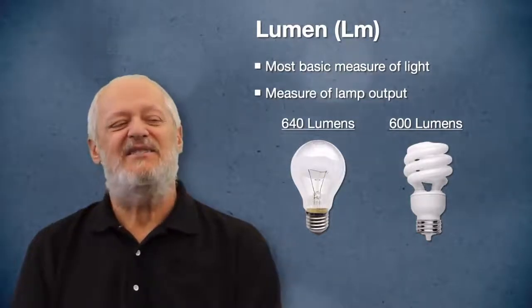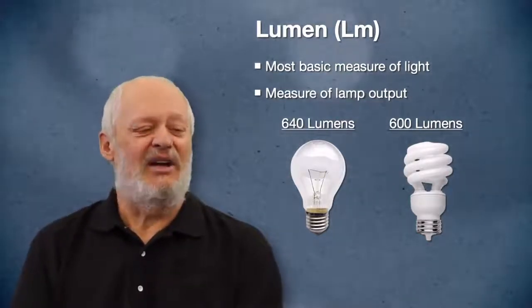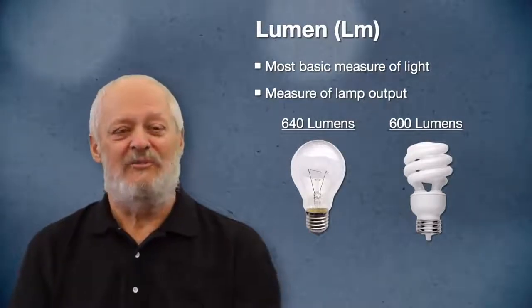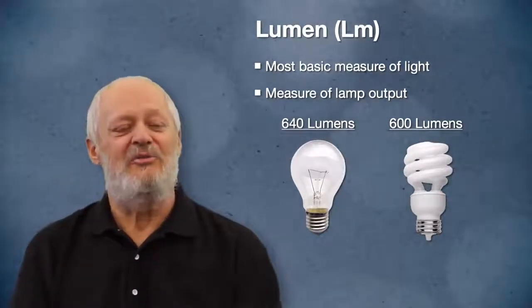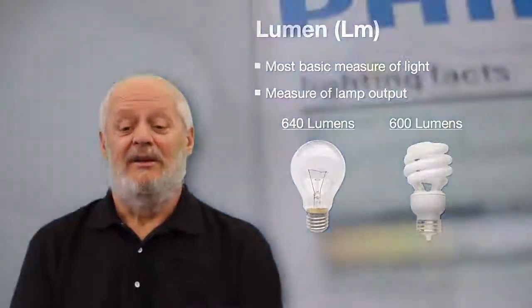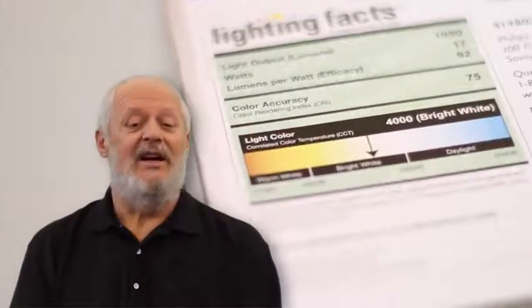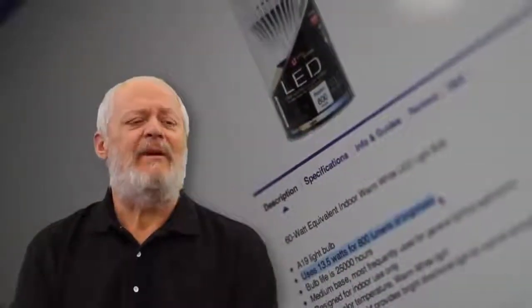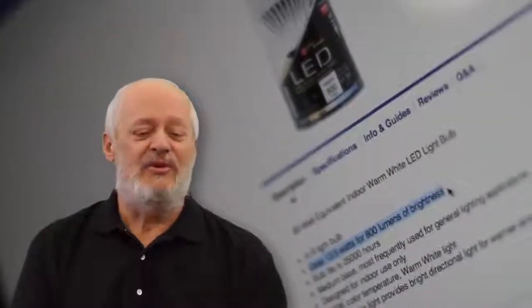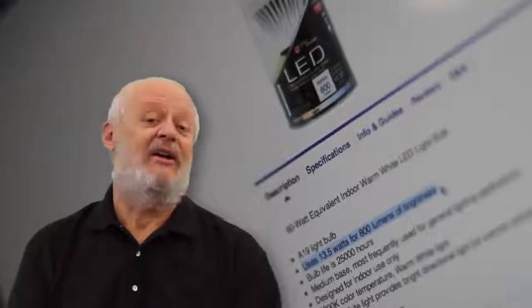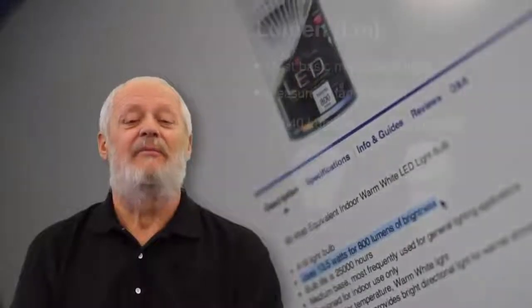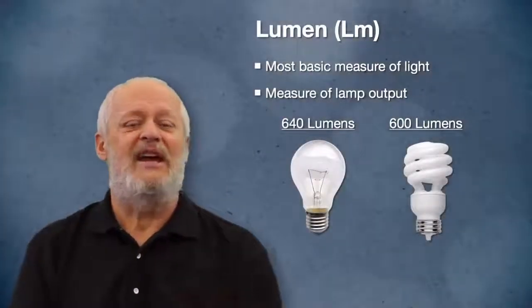Lumens are not easy to measure — you need a laboratory. It's not something you measure with a light meter in the field. You determine the lumen output of a lamp by reading the packaging, which will state how many lumens the lamp produces, or by going to a lamp catalog — I recommend going online. You can look up any particular lamp and it'll tell you the lumen output.